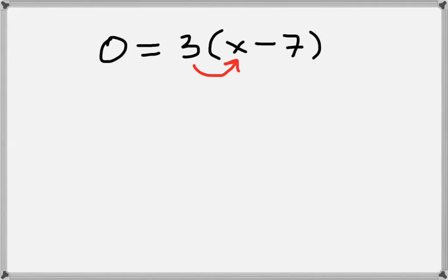So we'll take 3 times x, that gives us 3x, and then 3 times minus 7, so we have minus 21. On the left-hand side, we still have 0.